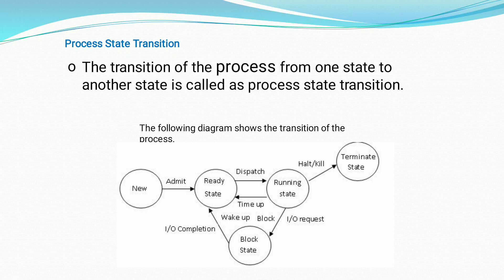In the running state, there will be a time slice. There may be more than 5 processes waiting in the ready state. A time slot is allocated for each process — for example, consider 5 milliseconds. Within these milliseconds, the process tries to complete its execution. If it gets completed, it moves to the terminal state. If the process does not finish execution when the time slice is expired, it is returned back to the ready state.